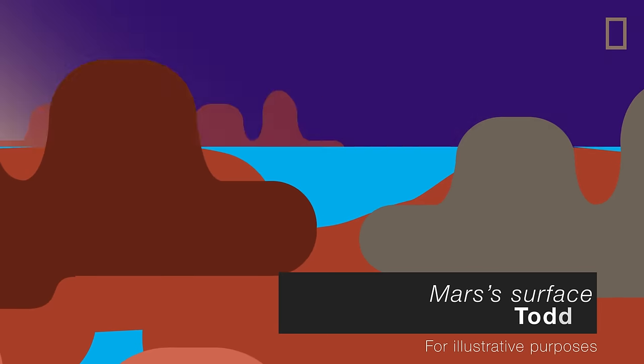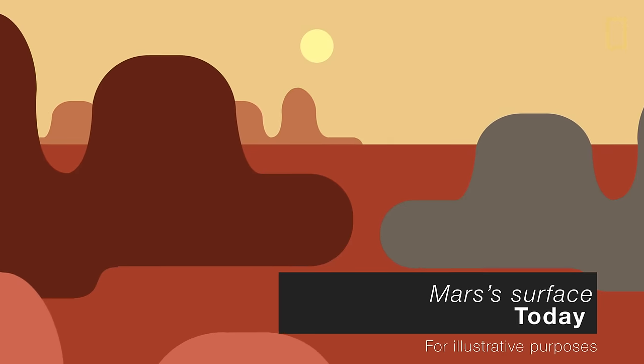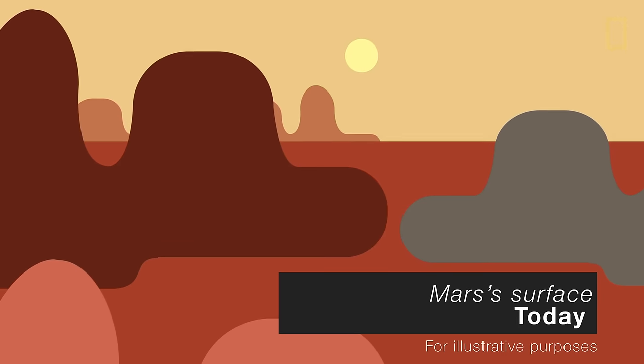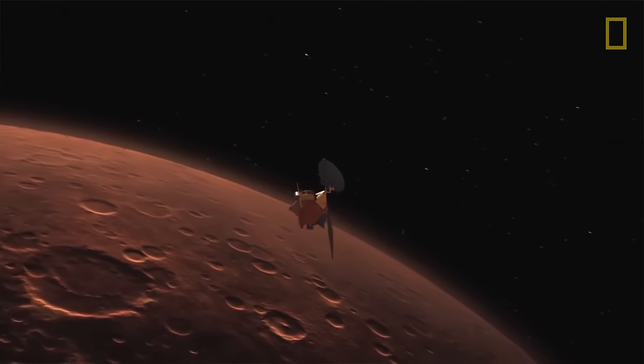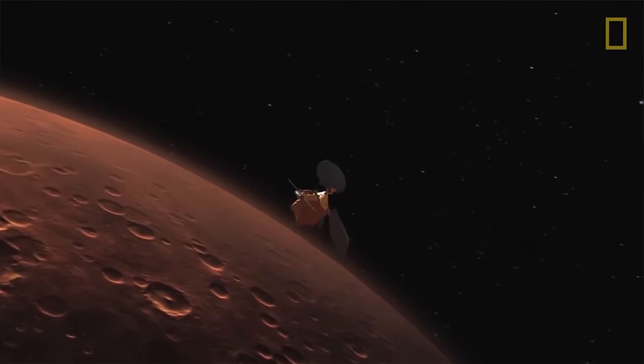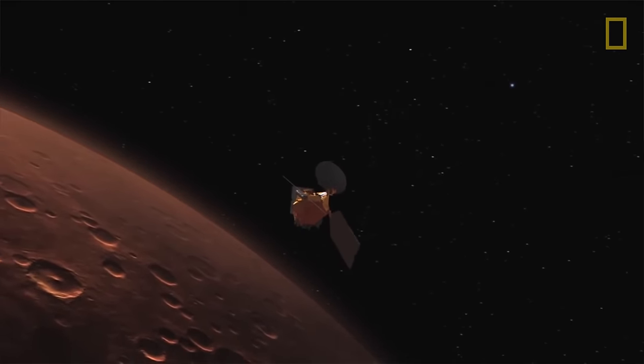Nowadays, Mars is a frigid and arid desert world with no signs of life, at least on the surface. But new data from NASA's reconnaissance mission shows evidence that liquid water does likely flow intermittently on the red planet.